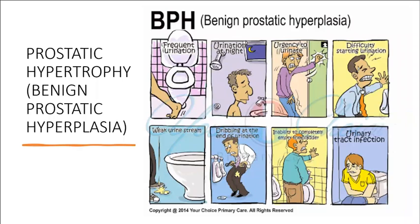Signs of BPH include: frequent urination — urinating many times during the day or night in normal or less-than-normal volumes, accompanied by a sense of urgency. There is also difficulty starting urination, weak urine stream, dribbling at the end of urination, inability to completely empty the bladder, possible urinary tract infection, hematuria before or after voiding, and urinary retention.